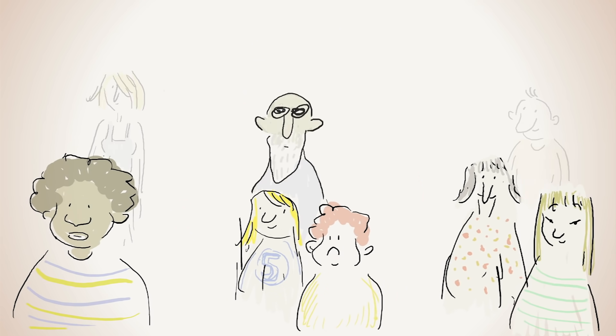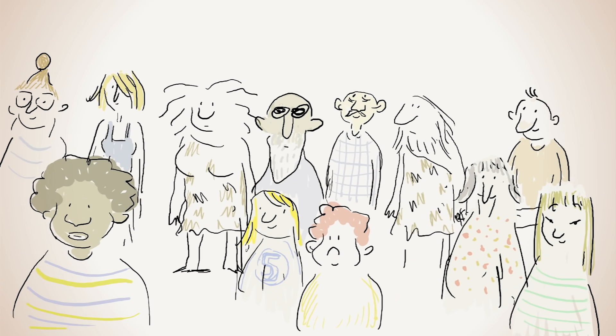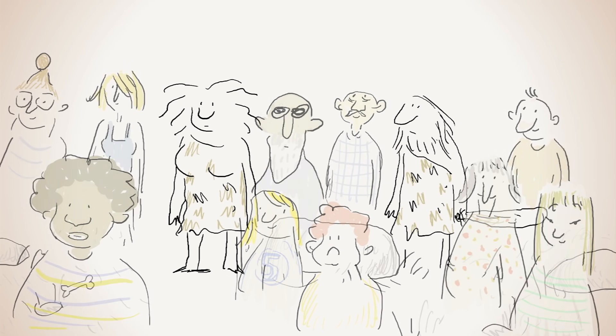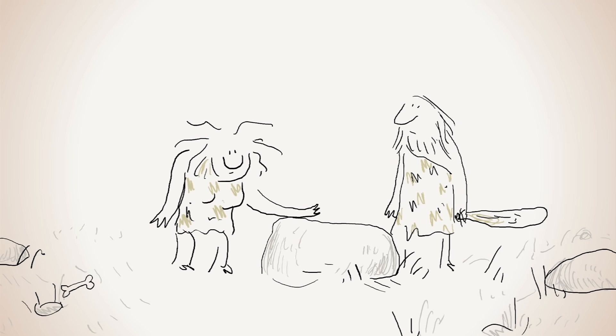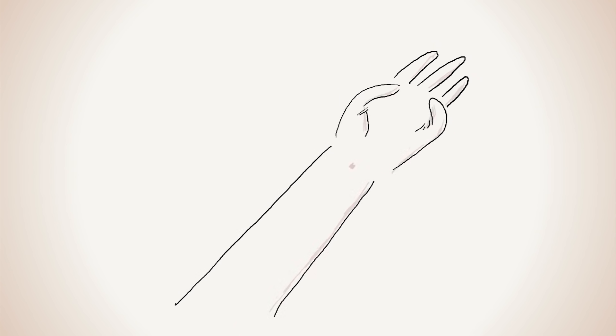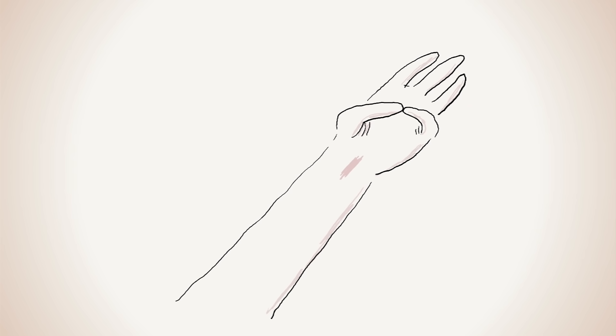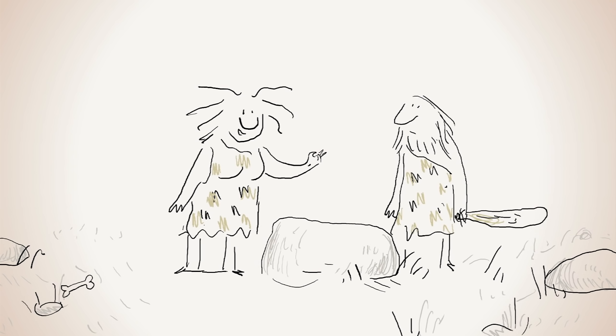Up to 85% of people have a vestigial muscle called the palmaris longus. To see if you do, put your hand down on a flat surface and touch your pinky to your thumb. If you see a little band pop up in the middle of your wrist, that's the tendon that attaches to this now-defunct muscle.